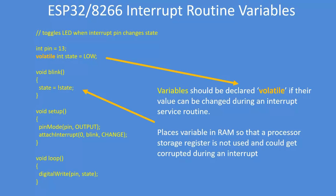Why do you need to call it volatile? That tells the compiler to place the variable into RAM and not use a processor storage register. Why? Because during an interrupt, processor storage registers can be used for other purposes, so it's just making the routine reliable.